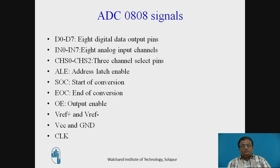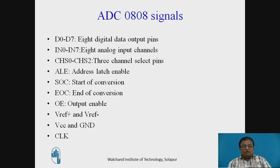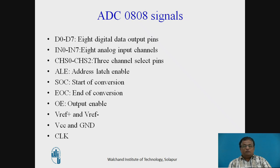ADC 0808 is called the 8-bit ADC because it produces an 8-bit digital output on pins D0 to D7. IN0 to IN7 are the 8 analog input channels through which one can apply the analog signal to the ADC. To select one of these 8 analog channels, 3 channel select lines are provided — CHS0 to CHS2 — which allow selection of the appropriate analog input channel.